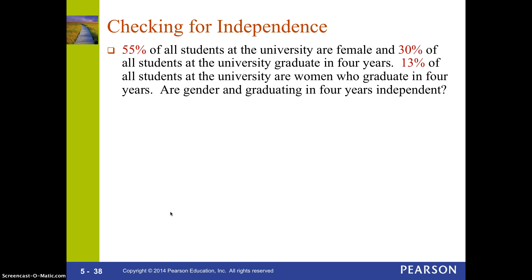55% of all students at the university are female, and 30% of all students at the university graduate in four years. 13% of all students at the university are women who graduate in four years. So we need to determine: are gender and graduating in four years independent?